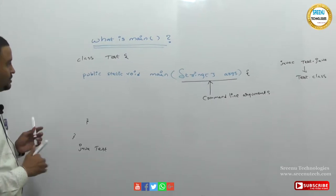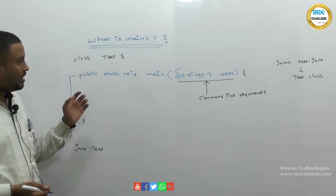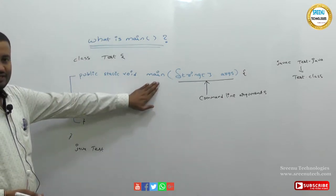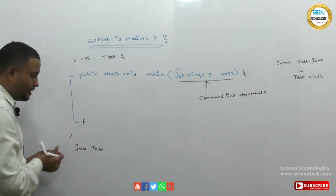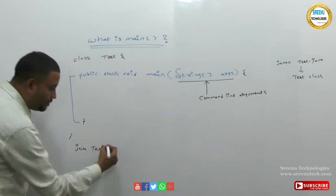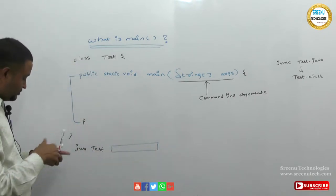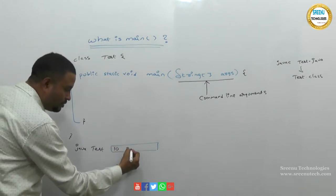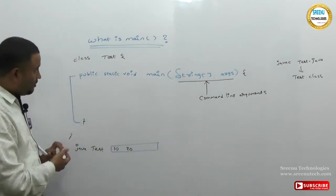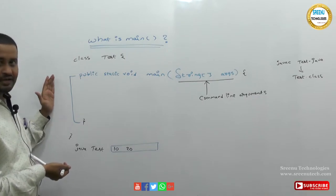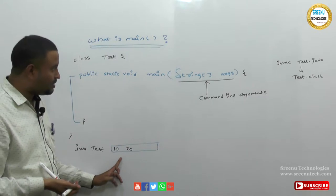When we execute any Java program, execution starts from the main method. Every standalone or core Java application's life cycle starts from its main method. If you want to pass command line arguments, you give a space and pass those values. For example, if you pass 10 and 20, these two values are stored into the string array.